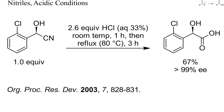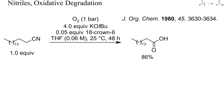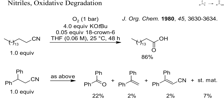Under strongly alkaline conditions and in the presence of oxygen, nitriles may undergo alpha-hydroxylation and oxidative C-C bond cleavage. Here, a nitrile was stirred with an excess of potassium tert-butoxide and oxygen at room temperature for two days. A high yield of a carboxylate lacking one carbon atom resulted. With structurally more elaborate nitriles, many things can go wrong, though. In the second example on this slide, no diphenylacetic acid, but only a mixture of various oxidation products resulted.